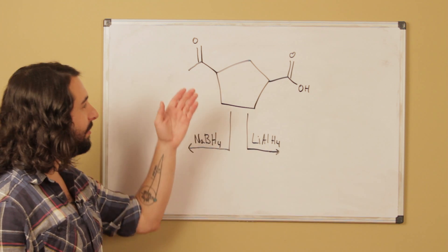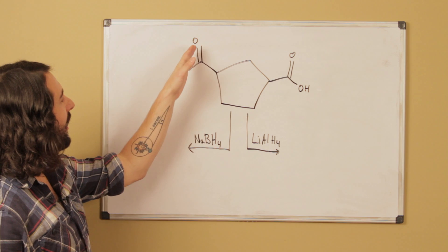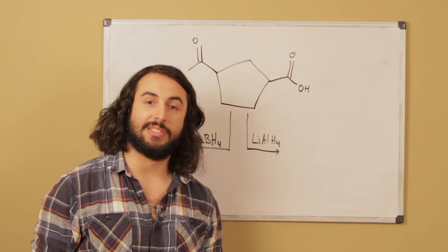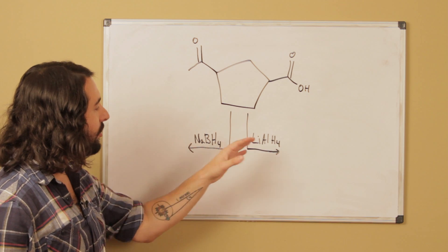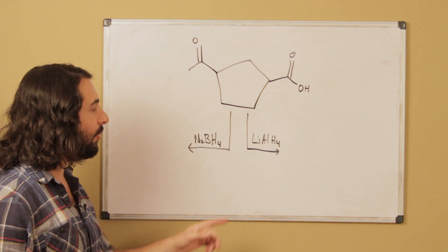Okay, so for this problem we've got a substrate here which has a ketone functional group and a carboxylic acid functional group, and we are going to do two reactions with two different reducing agents. We've got sodium borohydride and we've got lithium aluminum hydride.